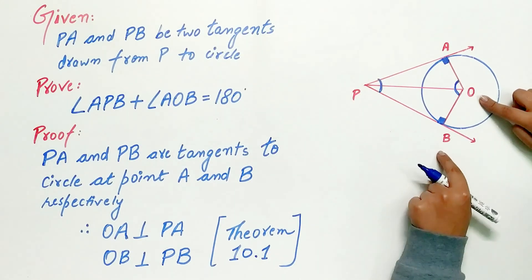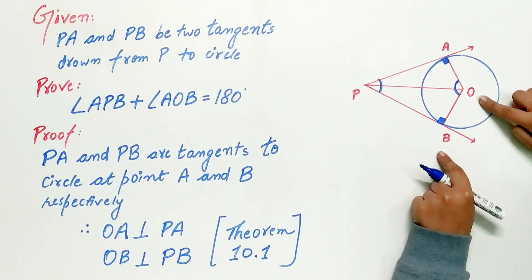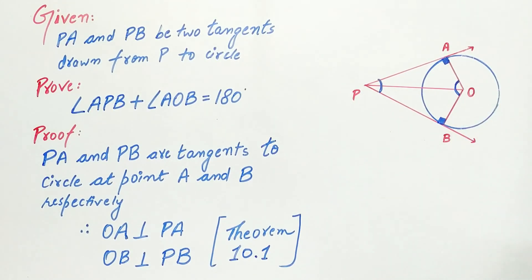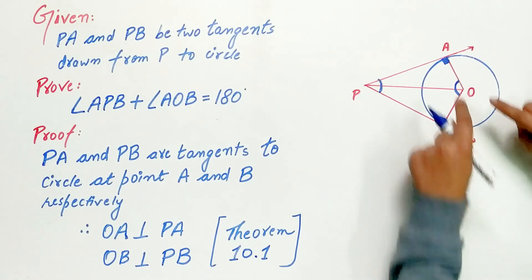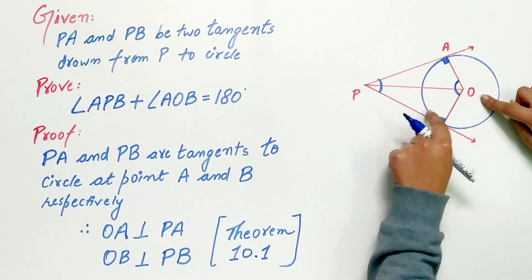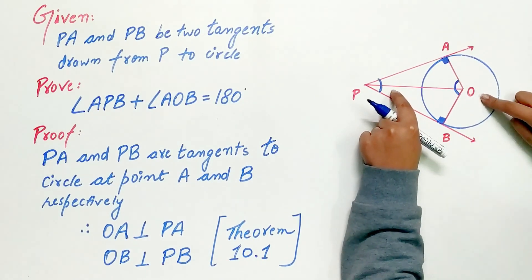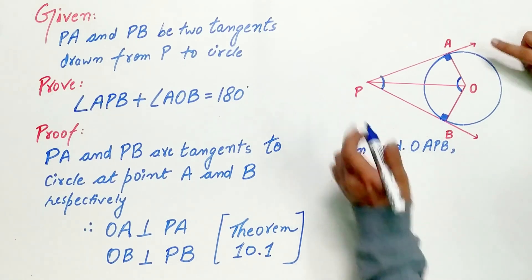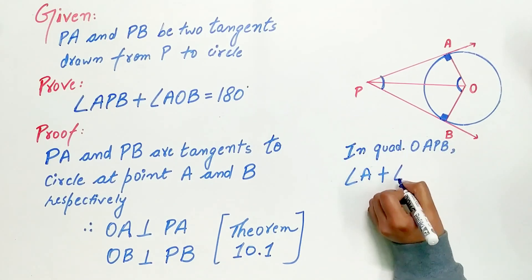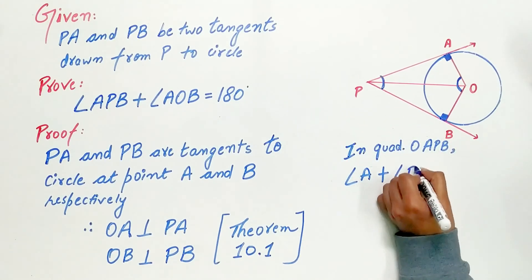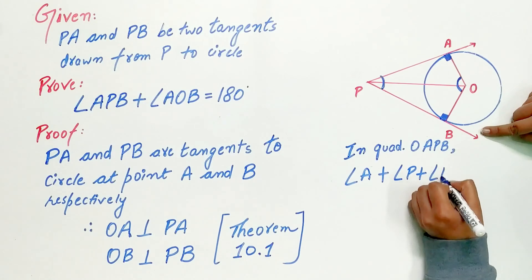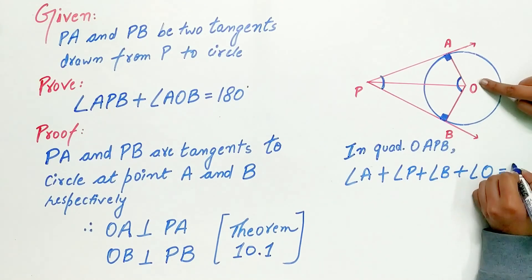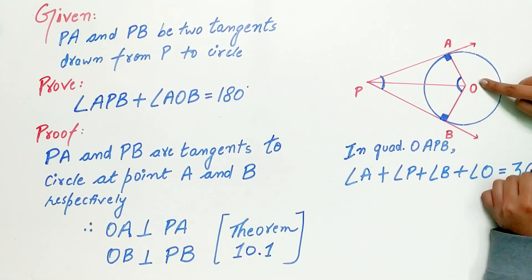OAPB is a quadrilateral — it has four sides. We know the sum of all the angles of a quadrilateral is angle A plus angle P plus angle B plus angle O, which is equal to 360 degrees.